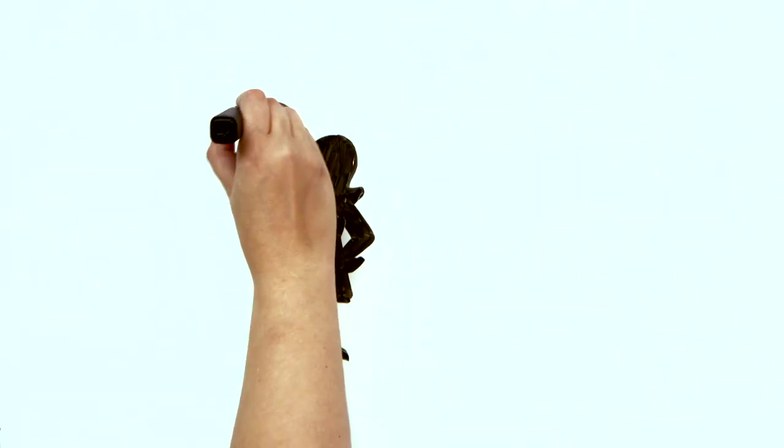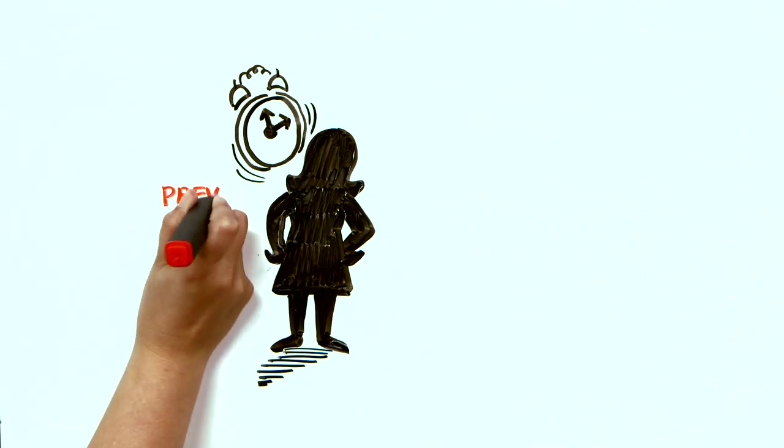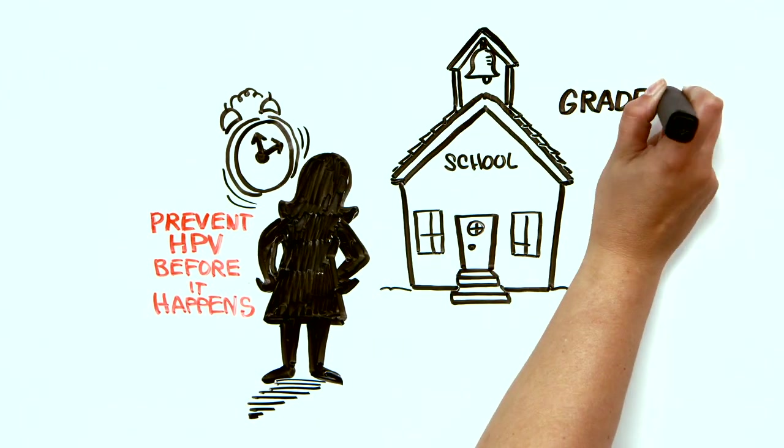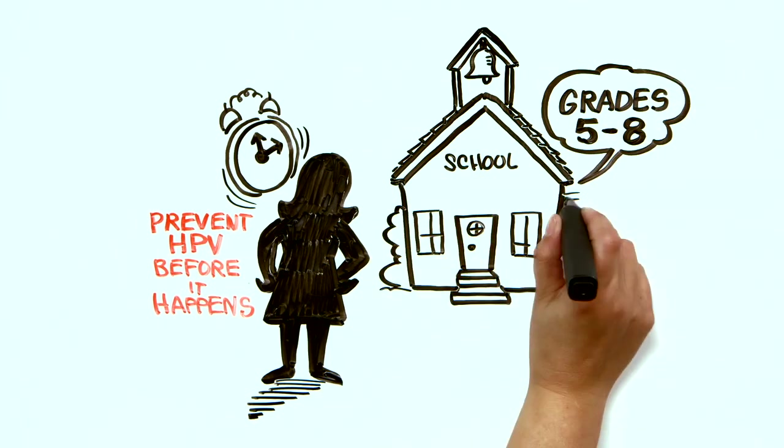The best time to receive the HPV vaccine is before a person becomes sexually active, to prevent HPV infection before it happens. That is why school programs aim to vaccinate girls in grades 5 or 6 or 7 or 8.